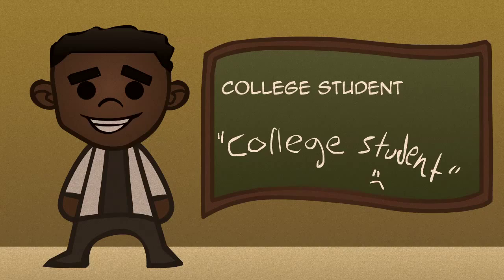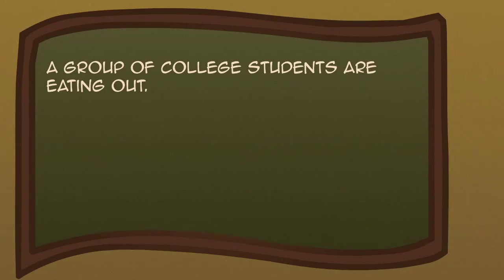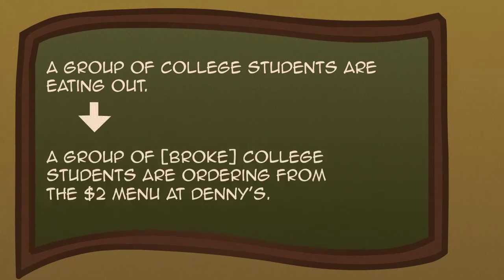It can also change the definition of an entire sentence. For example, 'a group of college students are eating out' translates to: a group of college students are ordering from the $2 menu at Denny's.